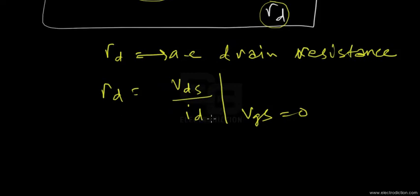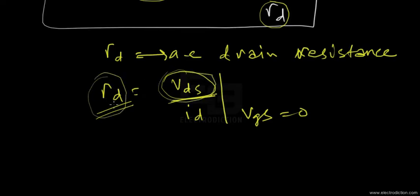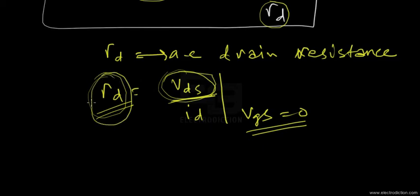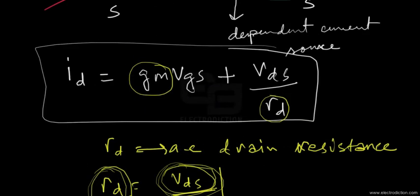Under no input signal given to the gate terminal, ID is dependent upon the magnitude of the drain resistance R_D as well as the drain-source voltage V_DS that develops at the output terminal.